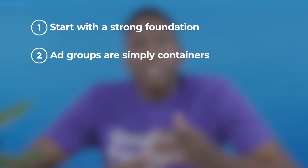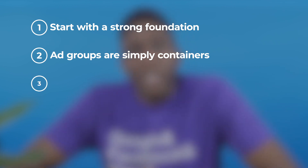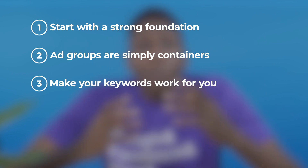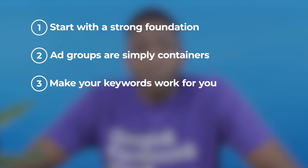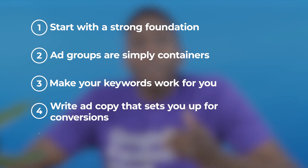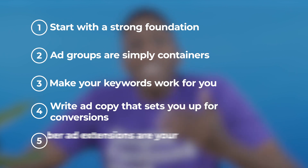Shall we review? Whether you're ready to build a brand new Google Ads account from scratch or want to overhaul a messy account you've just inherited, here are the main takeaways. Number one: start with a strong foundation — give your campaign structure and settings the attention they deserve. Number two: ad groups are simply containers, but they're very important to control keyword and ad association. Number three: make your keywords work for you — start with modified broad match keywords, two to three terms in each keyword that show clear intent. Number four: write ad copy that sets you up for conversions, and keep on testing. Number five: ad extensions are your friends — choose wisely and don't start spending money until they're enabled.